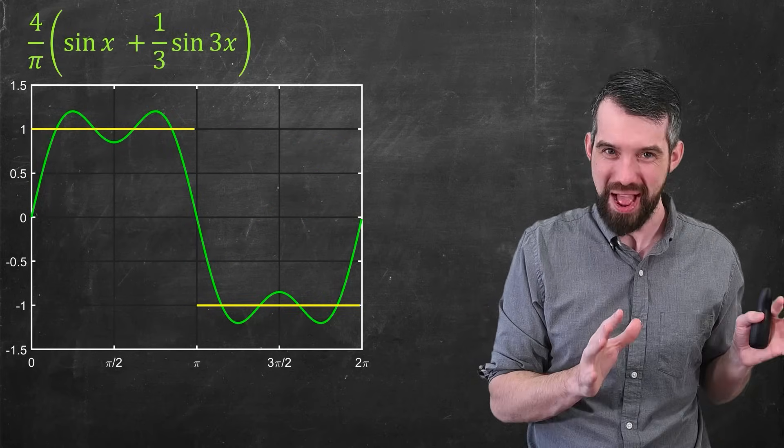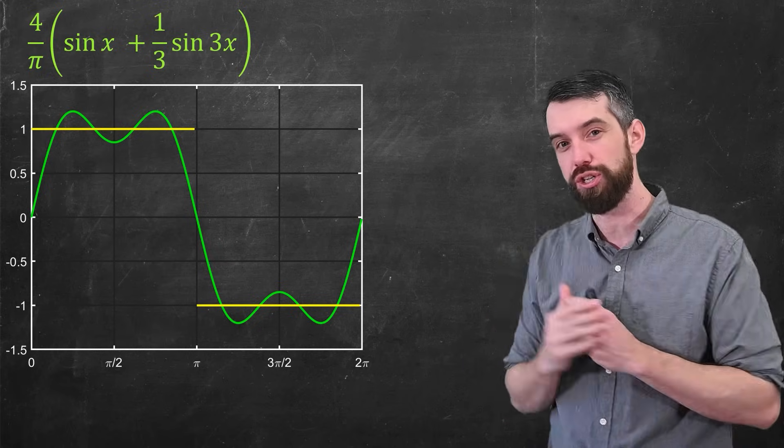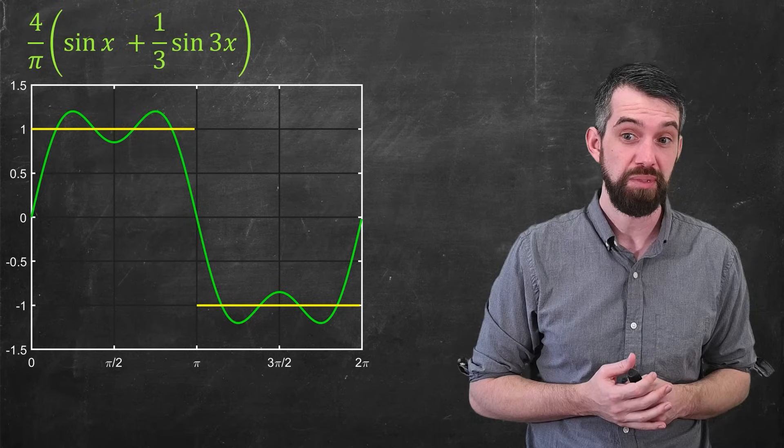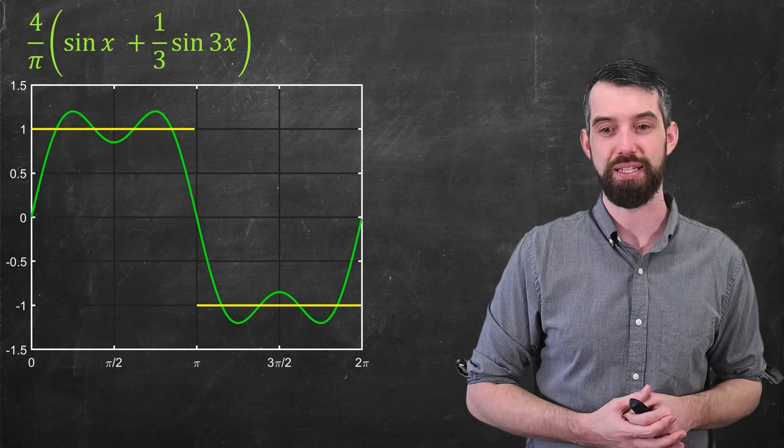So 4 over π out the front of sine of x plus one-third sine of 3x is this function. I think it's a better approximation. Still not perfect. Still definitely a difference between the green and the yellow, but better. And indeed, we can keep on doing this.